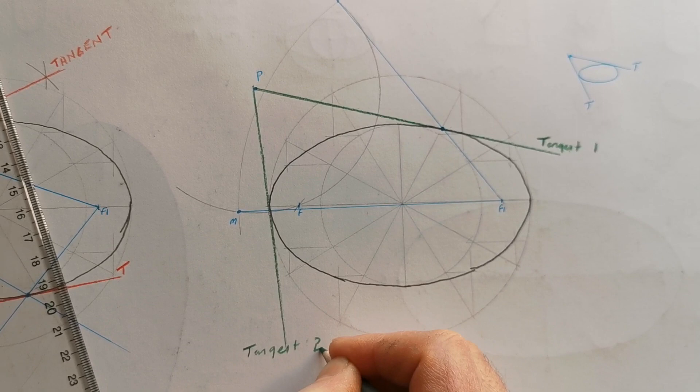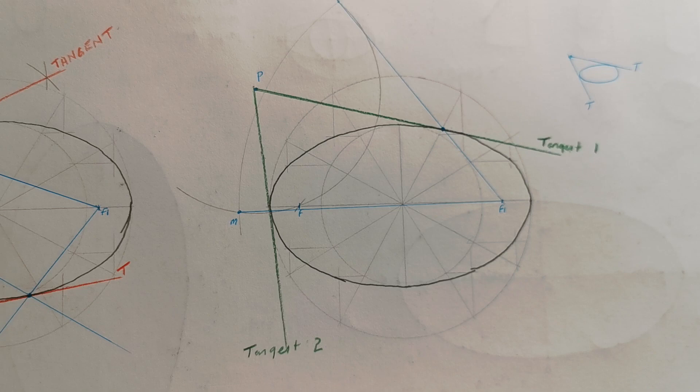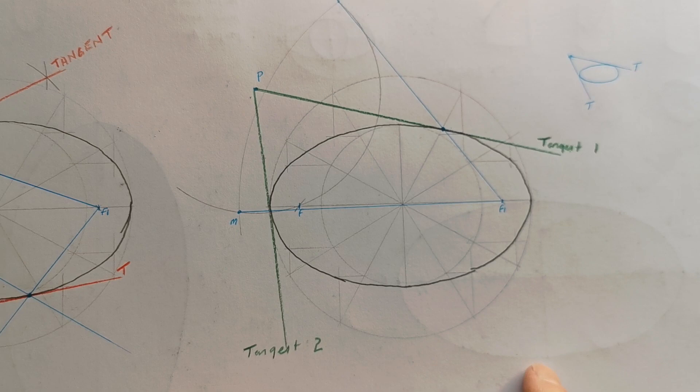Okay, so that is tangents to an ellipse: from on the ellipse and from outside the ellipse. And I would recommend that people practice doing them several times—like do three or four ellipses and practice them—because it takes a bit of practice and repetition to get quick at them.